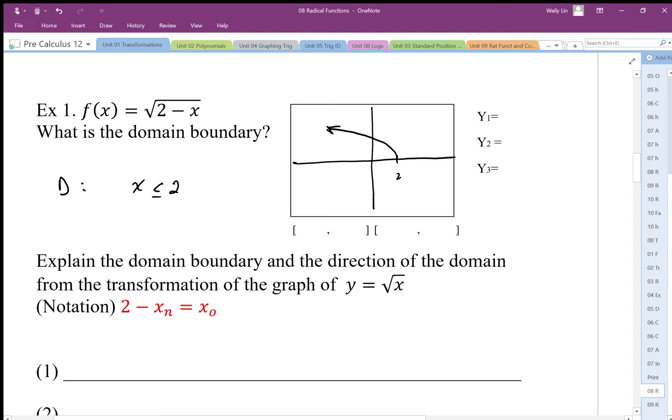So I end up with my domain looking like this: x is gonna be less than 2, and it's a continuous variable. So that's one way I can do it.